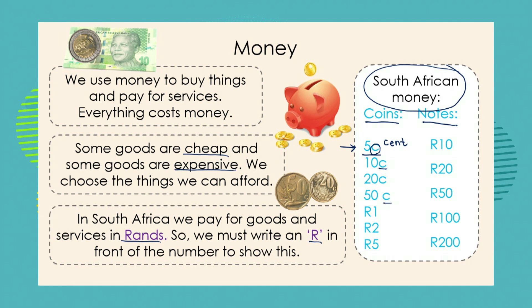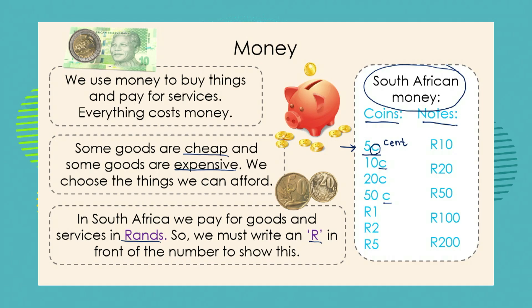When we talk about the notes and our R1, R2, and R5 coins, we put the letter R before or in front of the numbers. For example, R1 — we put the R in front of the 1. When we look at the notes we put the R for rand in front of the 10. The R stands for rand. So we have R10, R20, R50, R100, and R200.